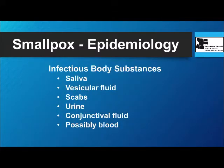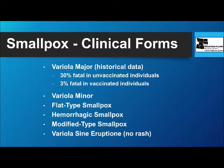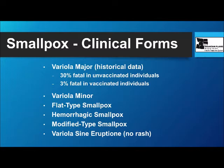The substances known to be infectious are saliva, the fluid from the smallpox vesicles, the scabs, urine, conjunctival fluid, and possibly blood. There are a number of different forms of the disease: variola major, the traditional form with a 30% fatality rate if unvaccinated; variola minor; flat type; hemorrhagic; modified type; and variola without an eruption, in which patients don't have a rash.